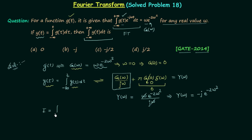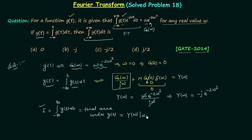The question asks for the integral I equals integration from minus infinity to infinity of y(t) dt, which represents the total area under the signal y(t). From the property of the Fourier transform, the total area under a time domain signal equals its Fourier transform evaluated at ω=0. So we put ω=0 in Y(ω): we get -j·e^0 = -j·1 = -j. Therefore the result of the integration is -j.